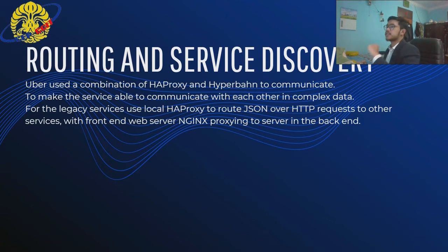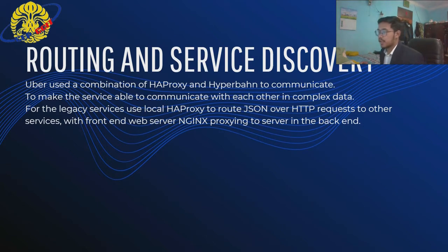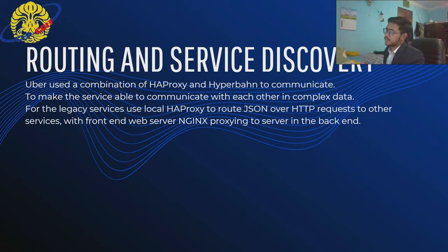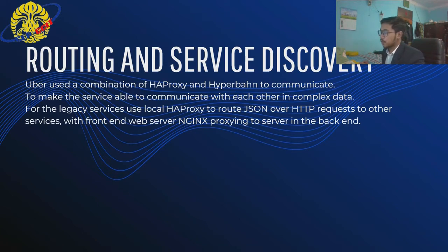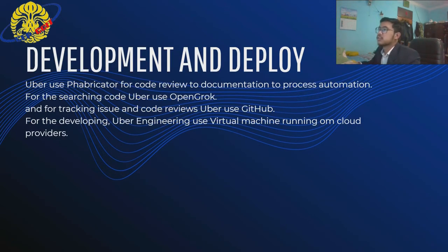For routing and service discovery, Uber uses a combination of Hyperbahn and Hyperbahn-bound to enable services to communicate with each other in complex data flows. Legacy services use a local Hyperbahn proxy to route JSON over HTTP requests to other services, with a front-end web server and NGINX processing requests to the backend. Next is development and deployment.